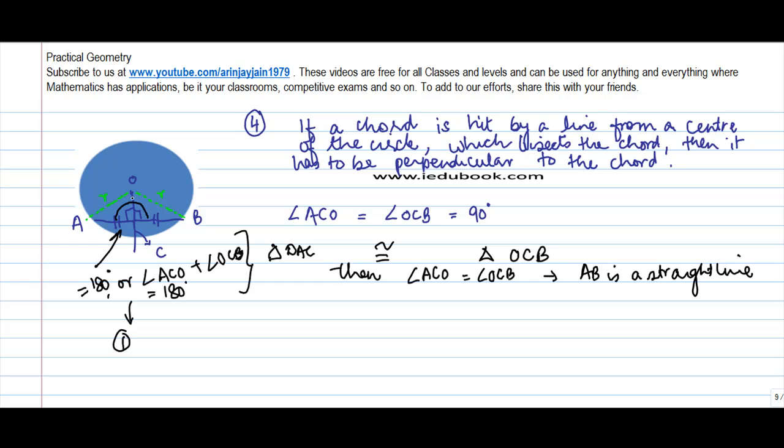So let's see triangle OAC and triangle OBC. In triangle OAC, OA is equal to OB is equal to R. Why? Both of them are radii. This becomes a side.